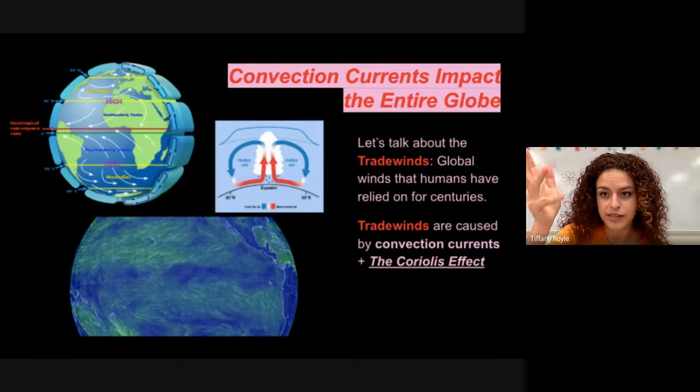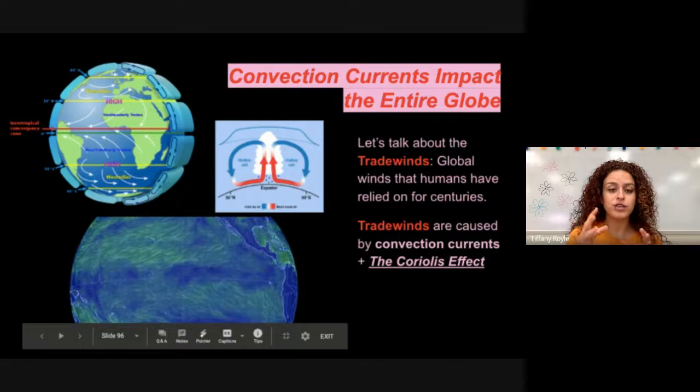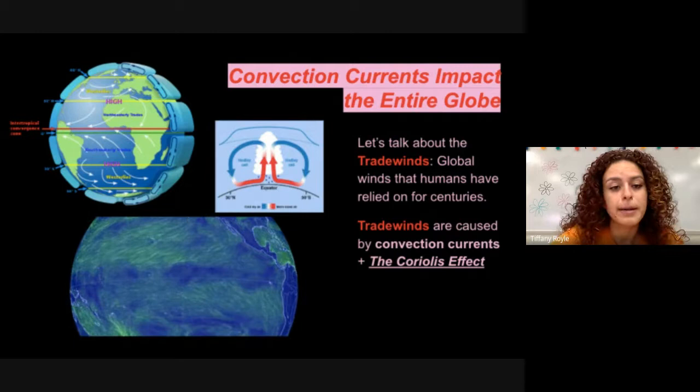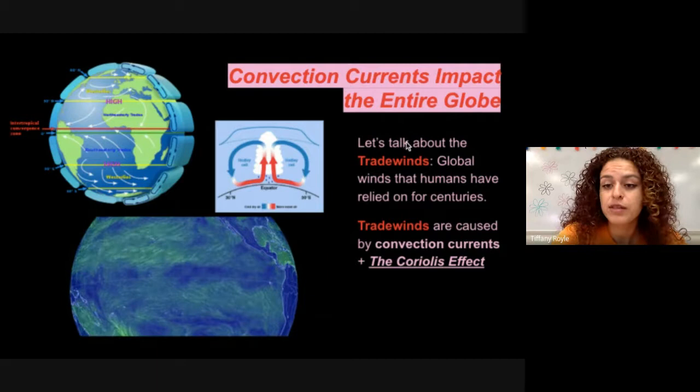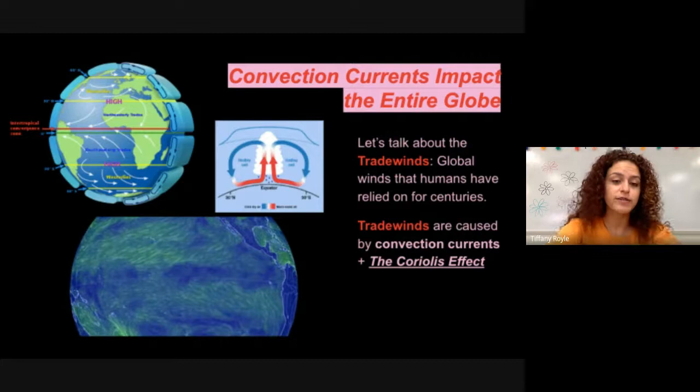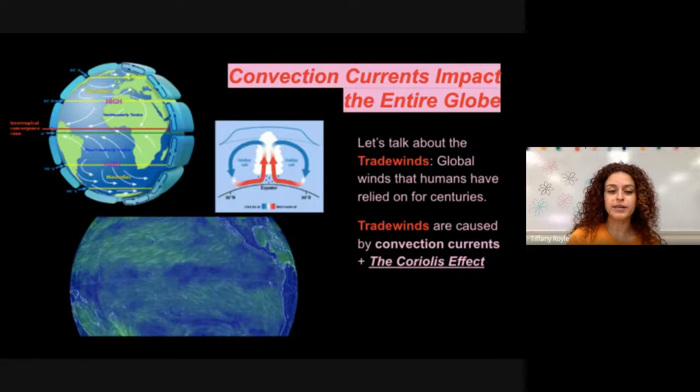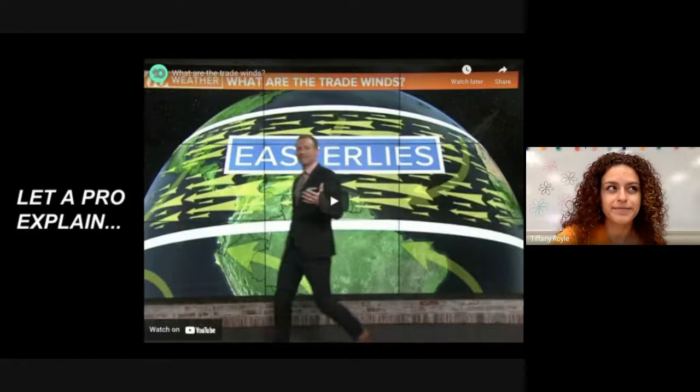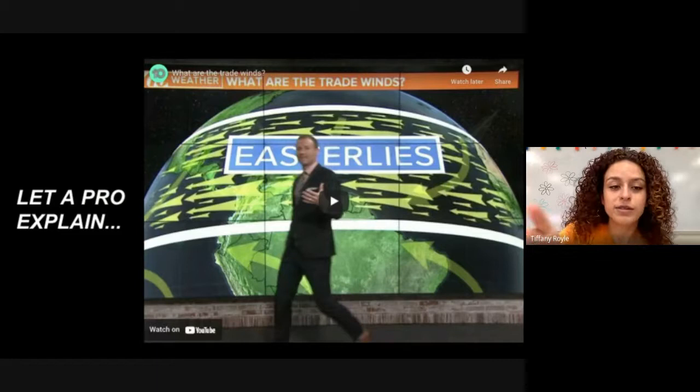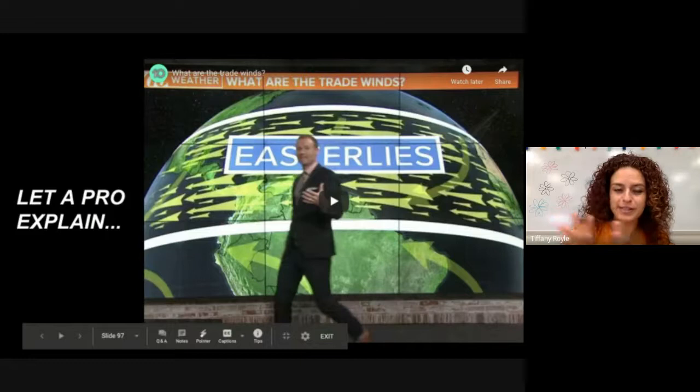So convection currents. What we just talked about is called a convection current. When the convection, the heat transfer between air molecules cause the air to begin moving, then that's a convection current. And these actually impact the entire globe, not just the atmosphere. They also impact the ocean. They create trade winds. And we're going to talk about trade winds. So trade winds are global winds that humans have relied on for centuries. And they are caused by those convection currents and also by something called the Coriolis effect. You might have heard of this in elementary school, but we're going to learn about it in depth right now. So the Coriolis effect is a little, not complicated, but you do need to pay attention to understand it. So take your time right now. Watch this video. I'm going to mute myself and let's see. He's going to explain the Coriolis effect a lot better and a lot more shorter, precise than I could. So let's hear what he has to say.